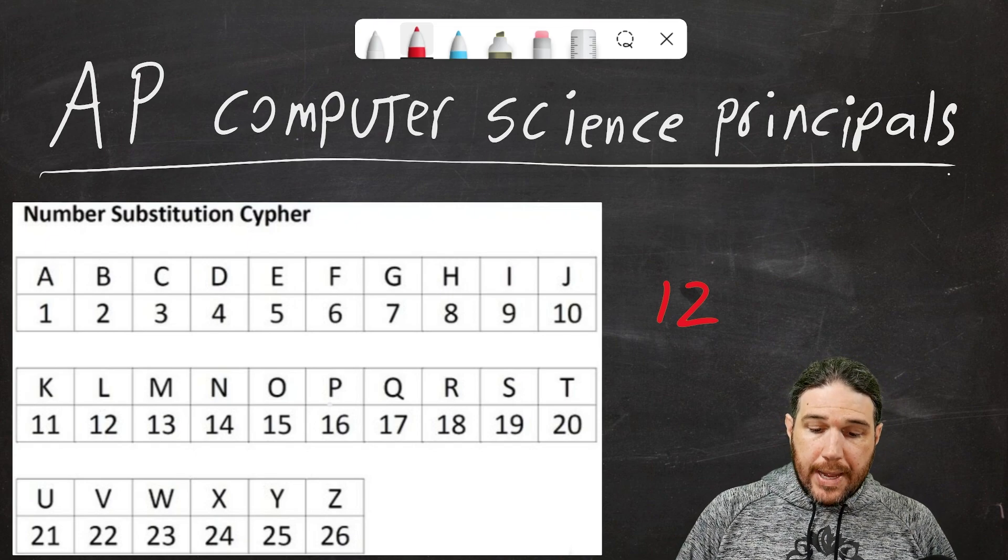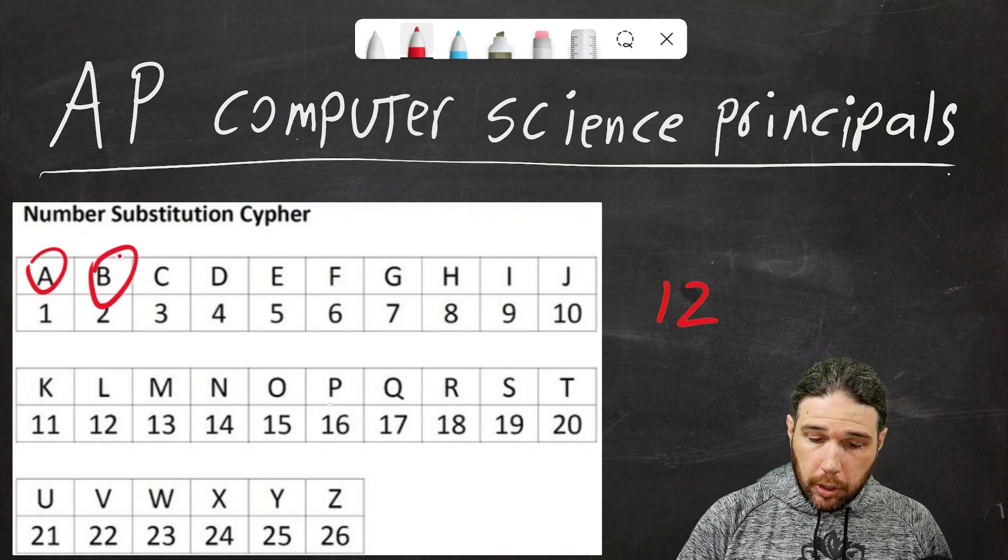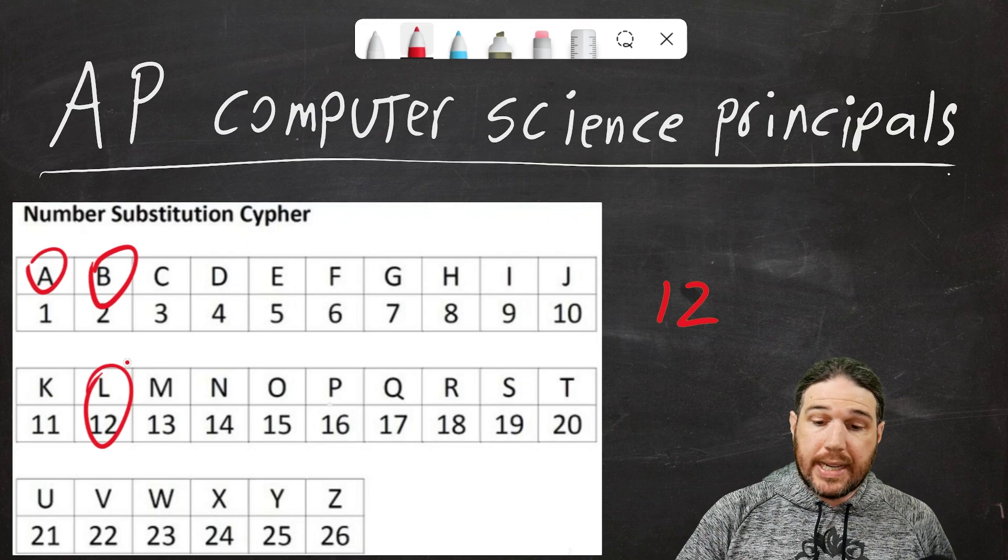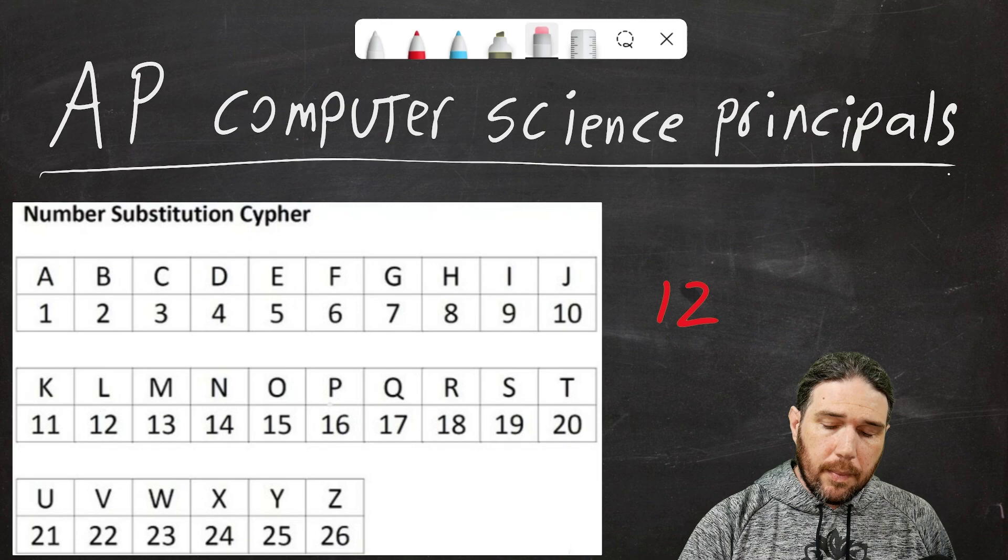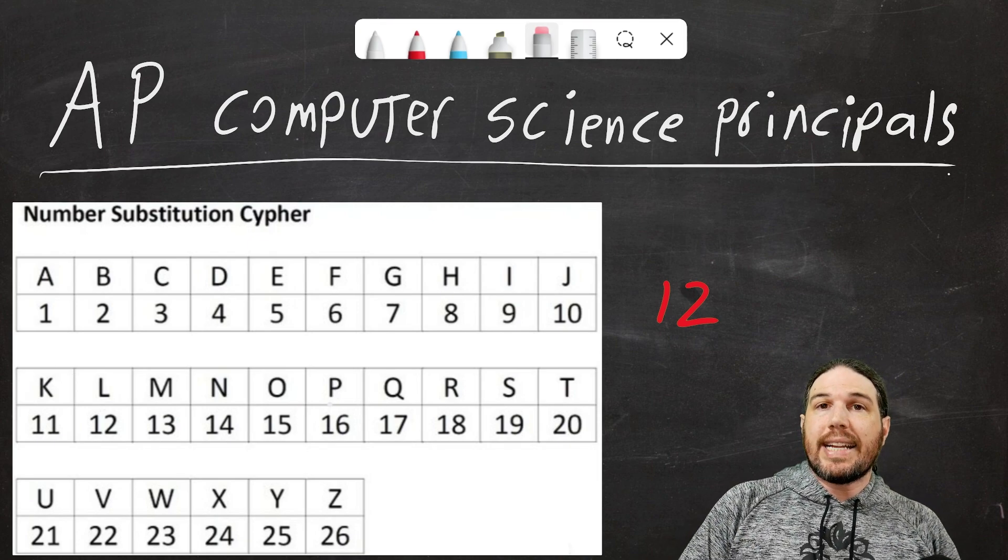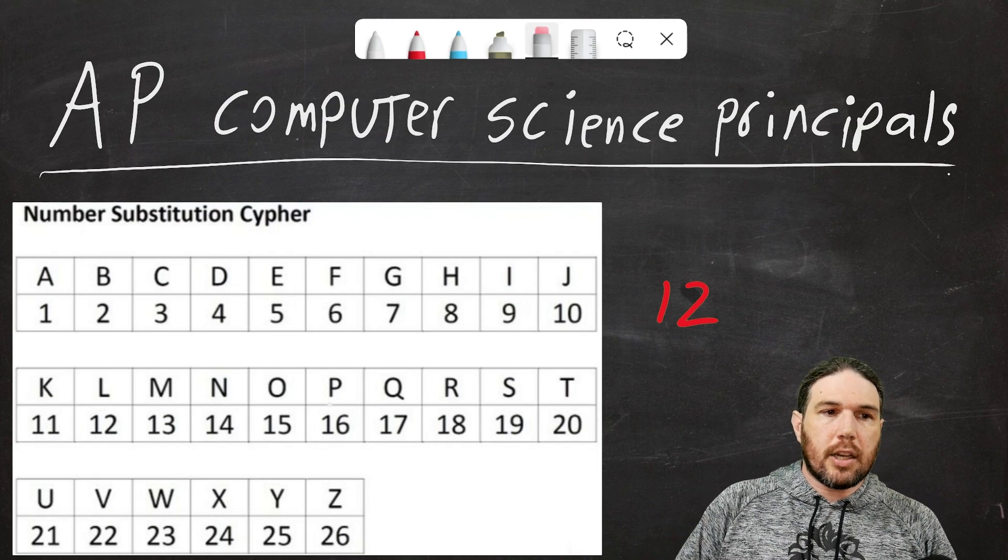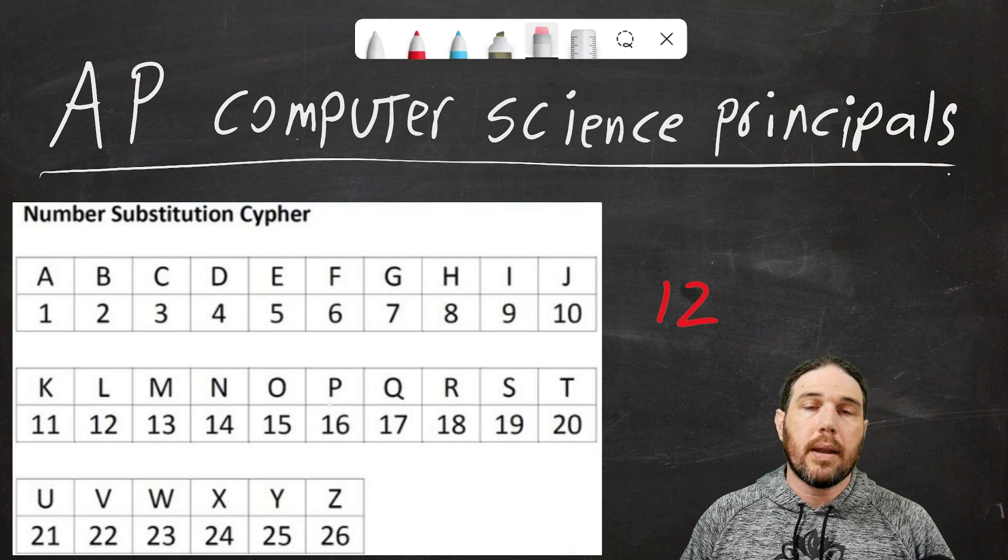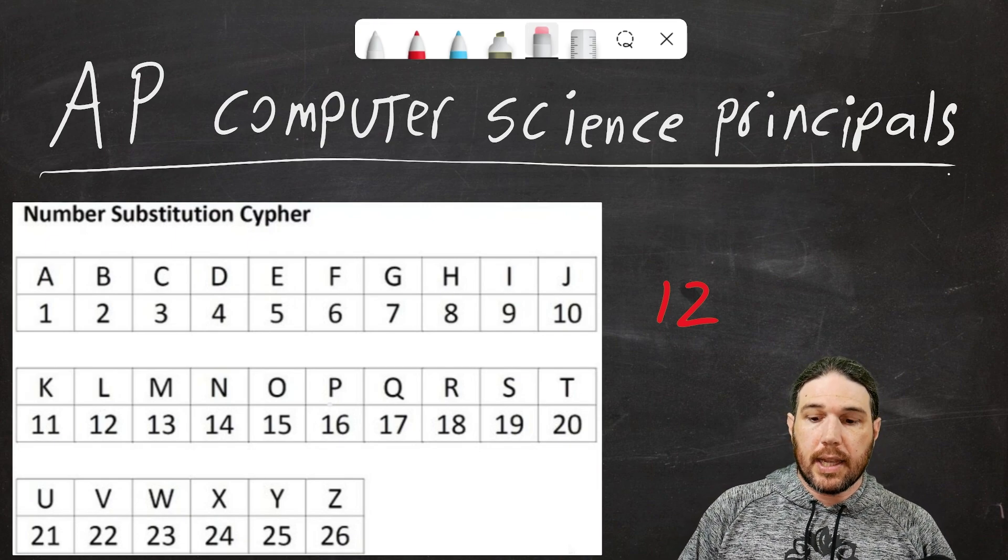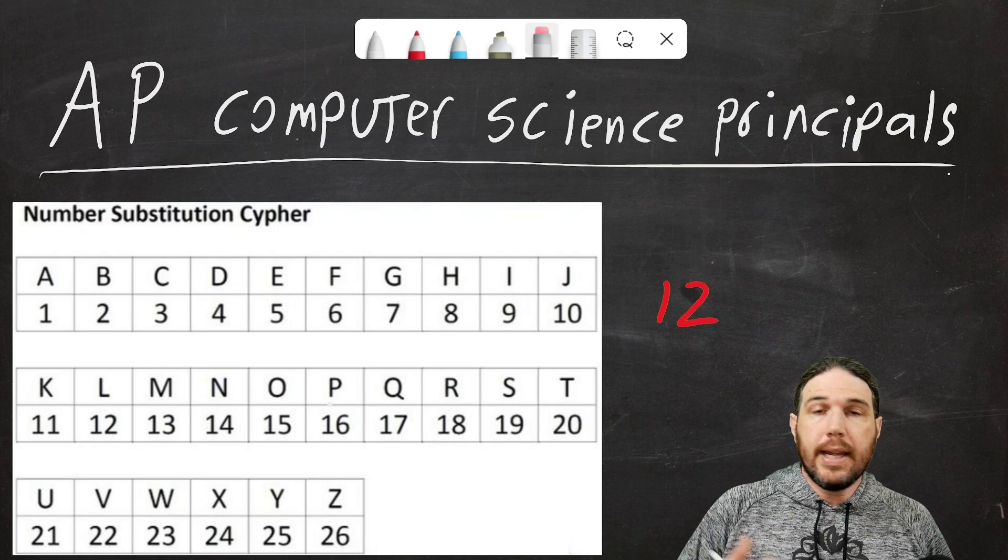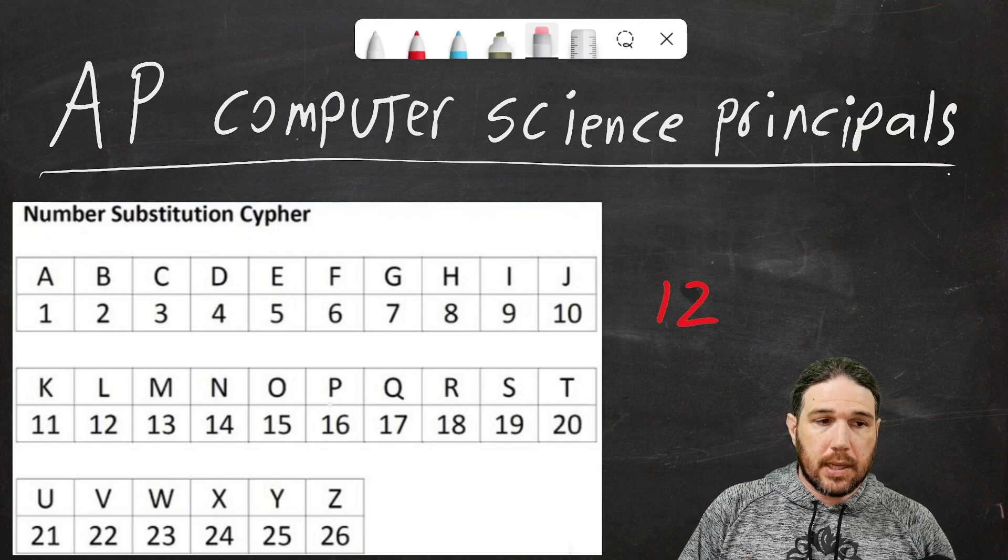First off, imagine I send you a message that says 1, 2. Well, how do you know whether I meant 1, 2, which would be A, B, or perhaps I meant L? And this could happen many times per word, and it could make things very confusing. You'll notice that when I did my original code, I did put spaces between each two digits to make it a little bit easier to see which individual letters were where, but computers don't work like that.